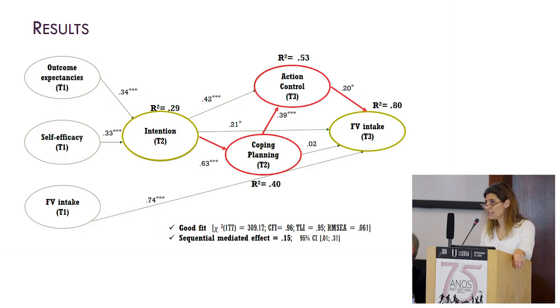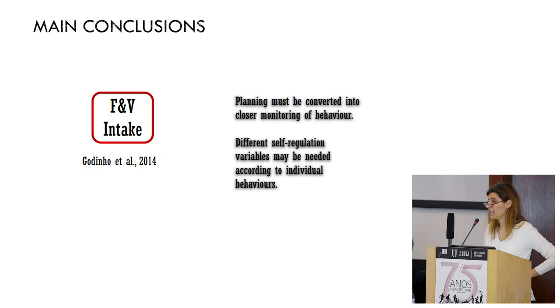Coping planning and action control were shown to act jointly in the prediction of fruit and vegetable intake. Although planning was closely associated with intentions, its effect on behavior was not direct, but there was a serial mediation via action control. From Cristina's work, I would say that although planning is a mediator between intention and action, this effect can vanish if other volitional constructs are included in the model, such as action control. Different self-regulation variables may be needed according to individual behaviors.